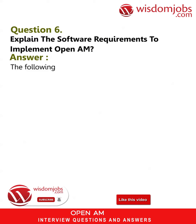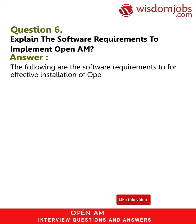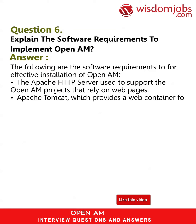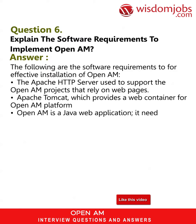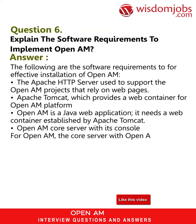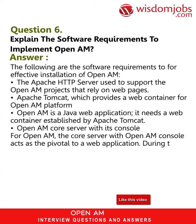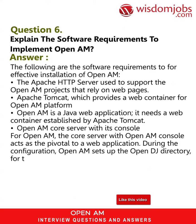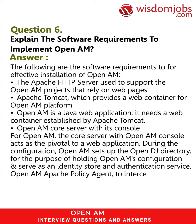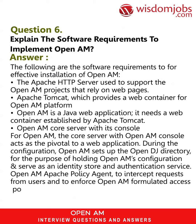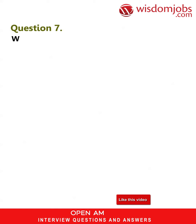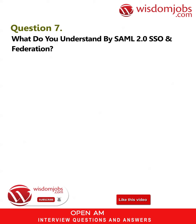Question 6: What are the software requirements to implement OpenAM? Answer: The following are the software requirements for effective installation of OpenAM: Apache HTTP Server, used to support OpenAM projects that rely on web pages; Apache Tomcat, which provides a web container for the OpenAM platform since OpenAM is a Java web application; OpenAM core server with its console, which acts as the pivot to a web application; during configuration, OpenAM sets up the OpenDJ directory for holding OpenAM configuration and serving as an identity store and authentication service; the OpenAM Apache Policy Agent, to intercept requests from users and enforce OpenAM access policy decisions; and the Java Development Kit, which must be pre-installed.